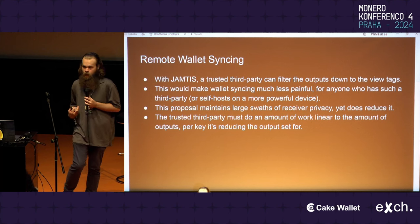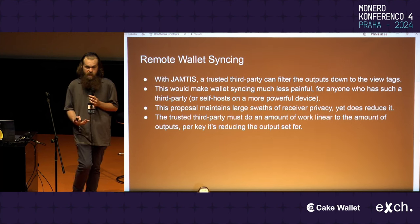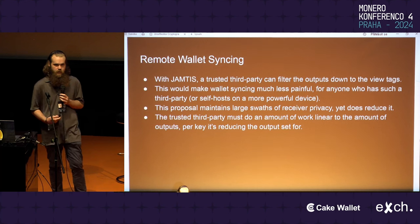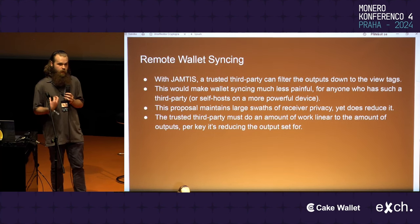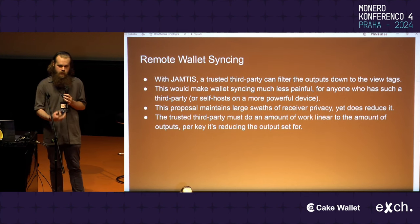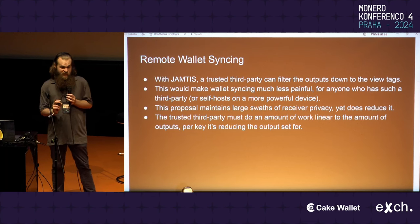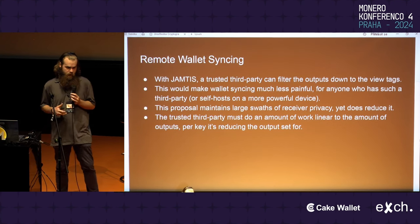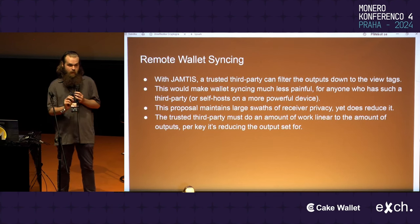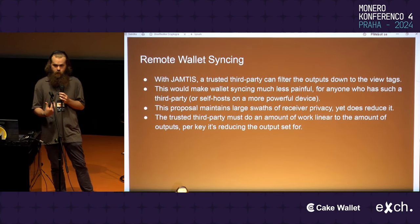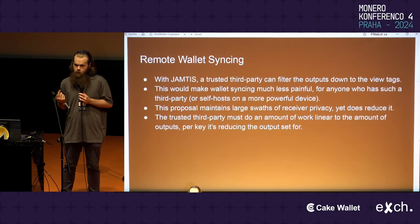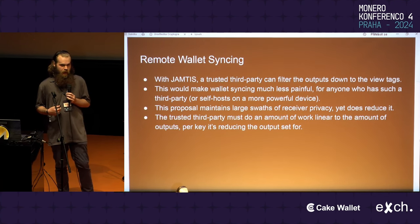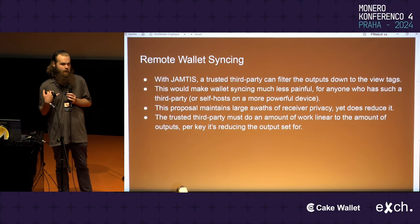Remote wallet syncing is an adjacent idea, which actually goes to Jamtis — I believe there's a talk on that Sunday. One of the nice features of Jamtis is that you can delegate the syncing process. With current Monero, you can hand over your view key and have someone find your outputs. With Jamtis, you can hand someone a specific view key and they can eliminate 255 out of 256 potential outputs — massively reducing the work you need to do while you still maintain a large degree of privacy. The downside is the trusted third party still has to go through every output, so we're still discussing this linear amount of work.